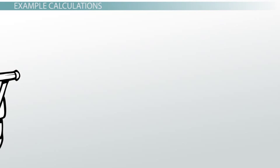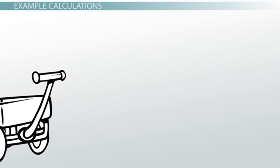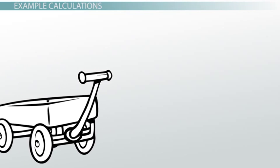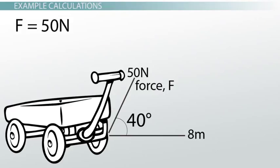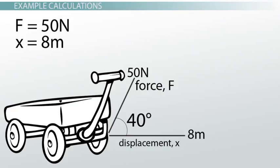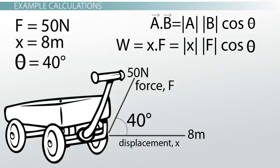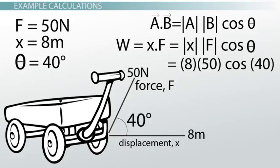Let's go through an example. You're dragging your cousin along the street in a wagon. Because of how tall you are, you pull up at an angle — it would hurt your knees to bend down all the time. If you pull at an angle of 40 degrees to the horizontal with a force of 50 newtons, and the cart moves 8 meters in the positive x direction, how much work is done in joules? The force F is 50 newtons and the displacement is 8 meters. Work is the scalar multiplication of force and displacement vectors. From the diagram, the angle between these two vectors is 40 degrees. Using our scalar multiplication equation: 8 multiplied by 50 multiplied by cosine 40 gives us 306 joules of work.